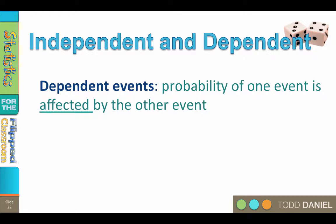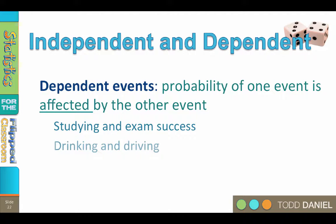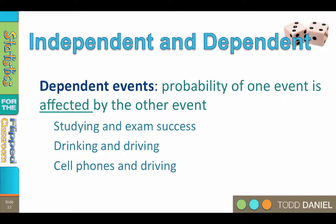Dependent events are events that we can control. Dependent events occur when the probability of one event is affected by other events. Whether you pass an exam depends on how much you study, or at least the probability increases. Your likelihood of dying in a car accident is dependent on whether you drink and drive, wear a seat belt or not, or use your cell phone when you should be paying attention to the traffic around you. Want to reduce your probability of being in a car crash? Hang up and drive.